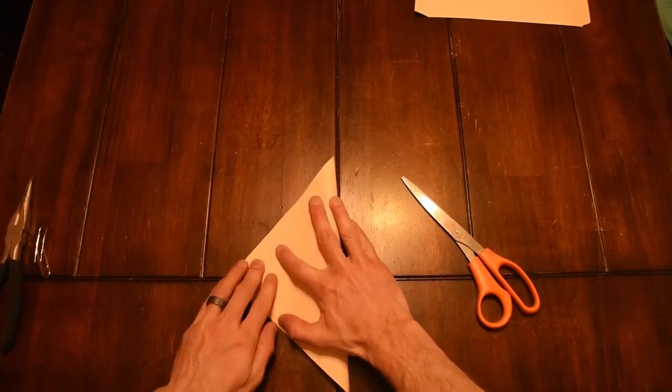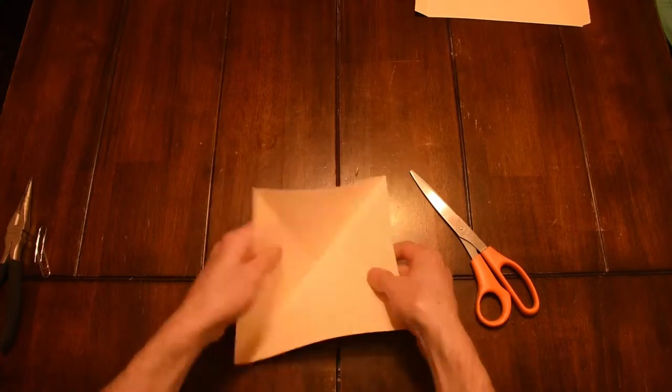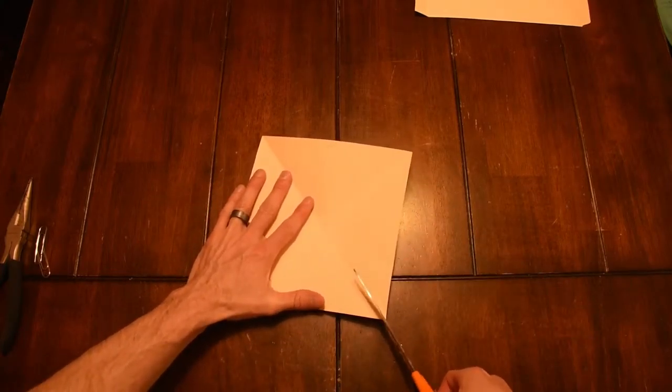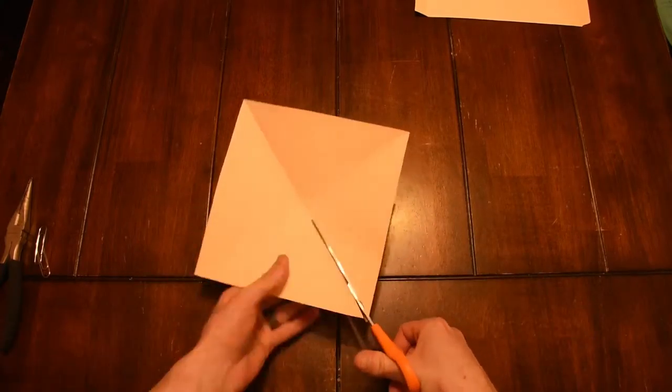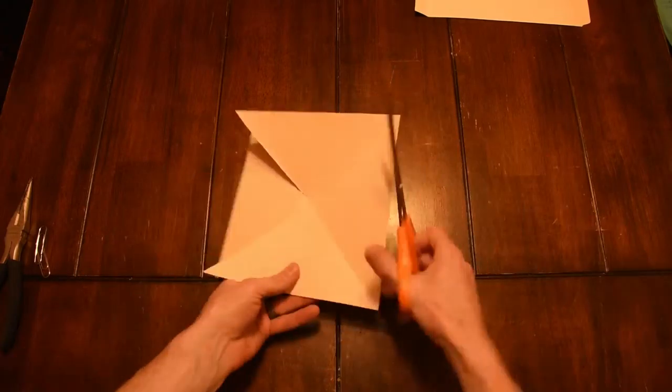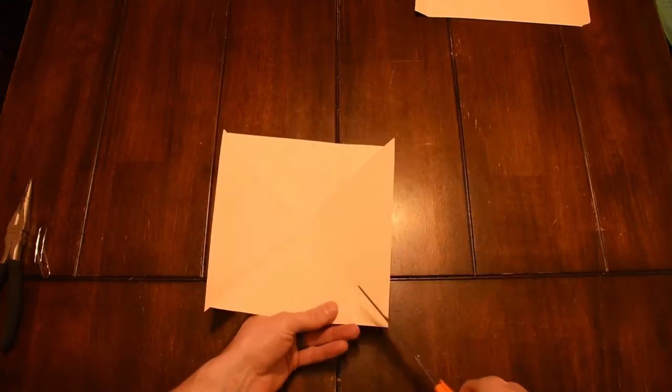Then I'll fold across the other way so that I have an X running down the middle. And now you cut along your diagonal lines here towards the center but make sure you stop short by a half inch to an inch. That way your blades don't fall off.